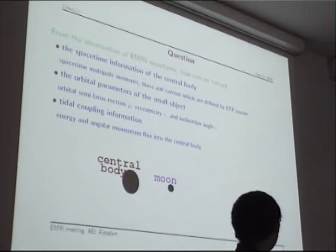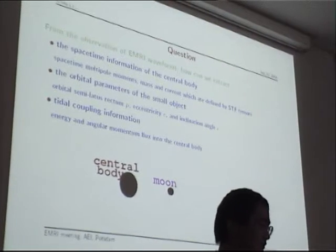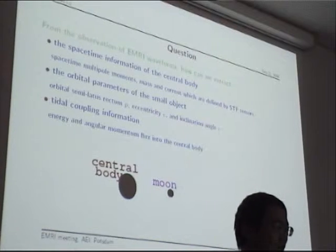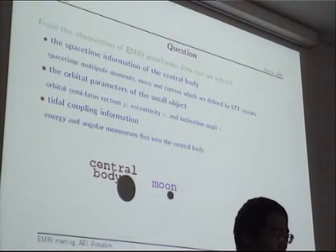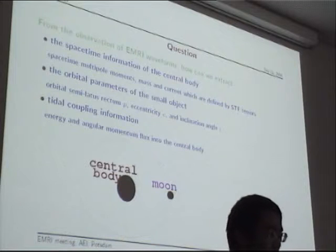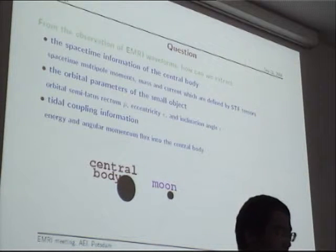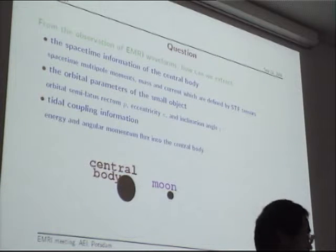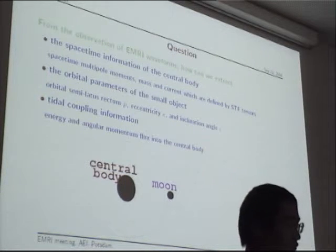The question is very simple. How can we, from observation of the EMRI waveform, extract the following: first, the spacetime metric of the central object; second, the orbital parameters of the small moon; and third, the tidal coupling between these two objects?